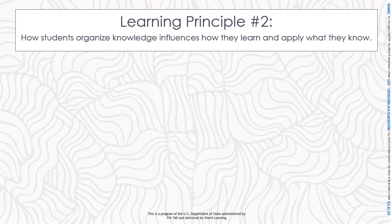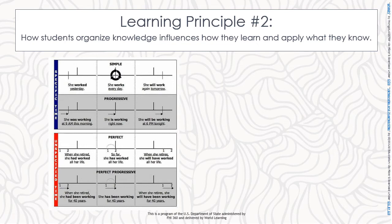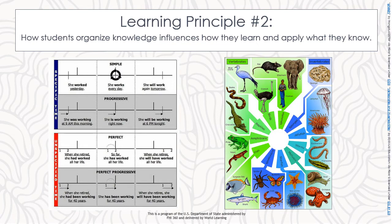Learning principle number two: how students organize knowledge influences how they learn and apply what they know. Knowledge organization has to do with how a person relates ideas to each other. For example, we relate verb tenses to timelines and to each other, and we divide up the animal kingdom into well-defined categories. The more interrelationships among concepts — and the stronger and clearer those relationships — the better a learner's understanding and ability to apply concepts to new problems. Thus, in addition to relating new knowledge to previous knowledge (principle one), teachers should explicitly address how concepts relate to each other and the situations in which they can be applied.